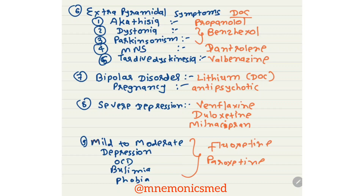For mild to moderate depression, obsessive-compulsive disorder, bulimia, and phobia, drug of choice is Fluoxetine or Paroxetine.